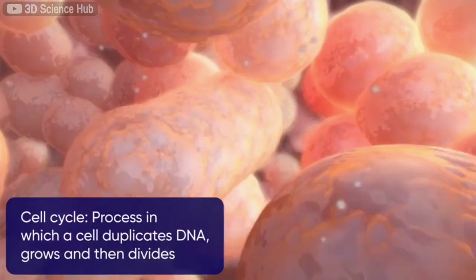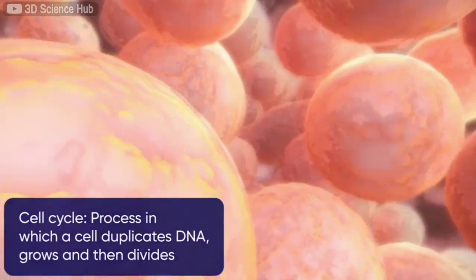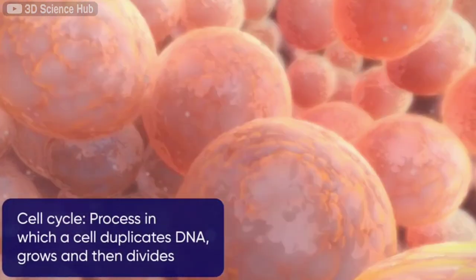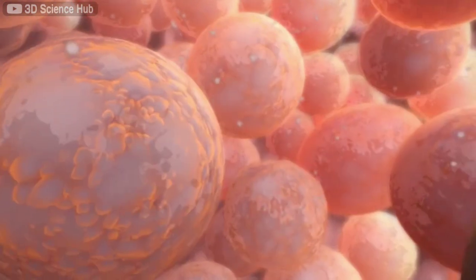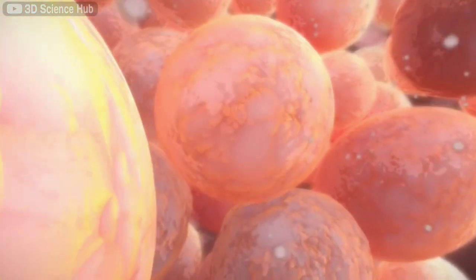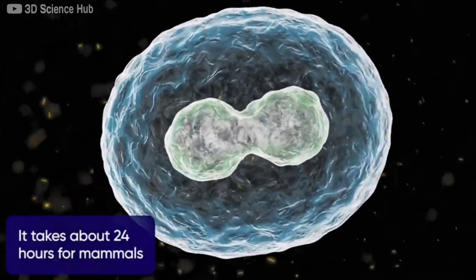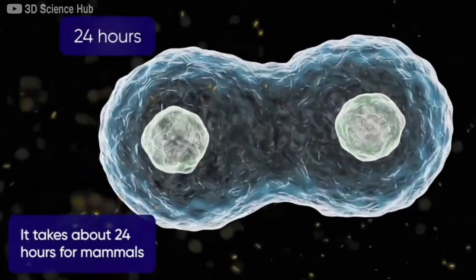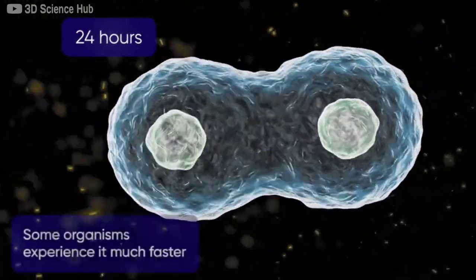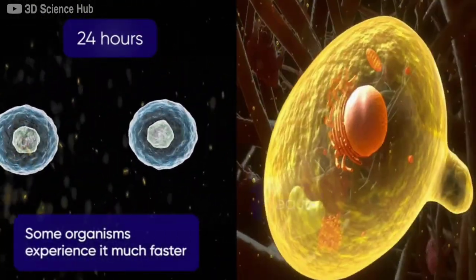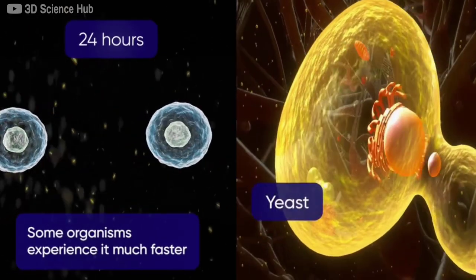A full cycle usually occurs within 24 hours in mammals, although in some organisms like yeasts it can be really fast, taking only 90 minutes.